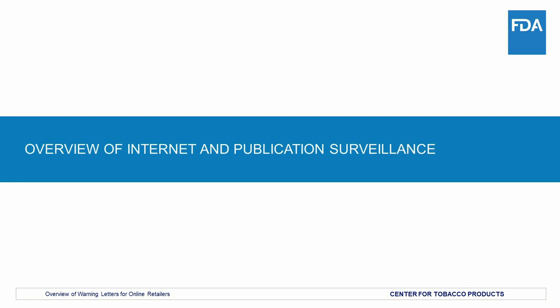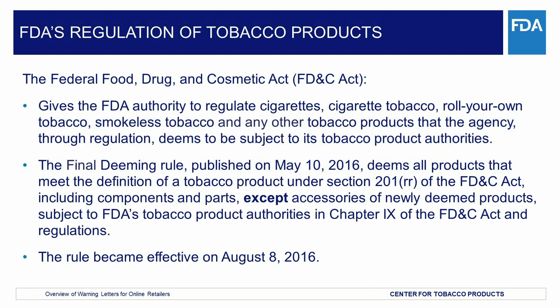Let's start with an overview of Internet and publication surveillance. The Federal Food, Drug, and Cosmetic Act, or the FD&C Act, as amended by the Family Smoking Prevention and Tobacco Control Act, also known as the Tobacco Control Act, gives FDA authority to regulate the manufacture, sale, distribution, and marketing of tobacco products. The Tobacco Control Act gave FDA immediate authority to regulate cigarettes, cigarette tobacco, roll-your-own tobacco, and smokeless tobacco under Chapter 9 of the FD&C Act. The FD&C Act also allows FDA, through regulation, to deem any other tobacco products subject to its tobacco product authorities.